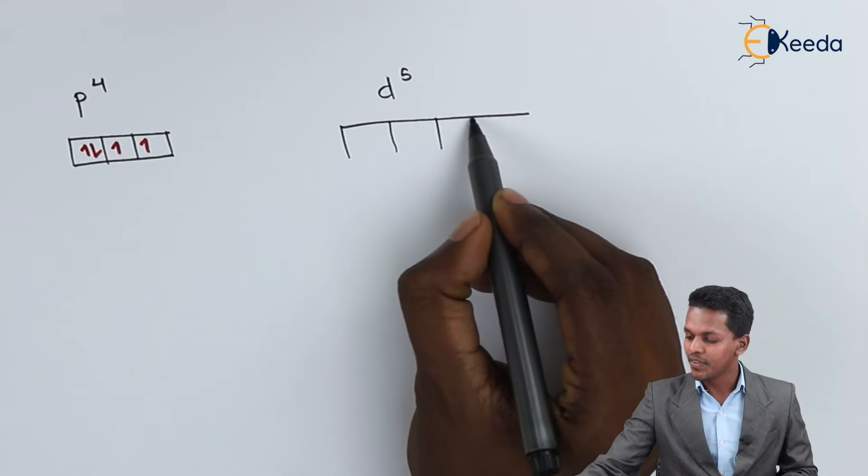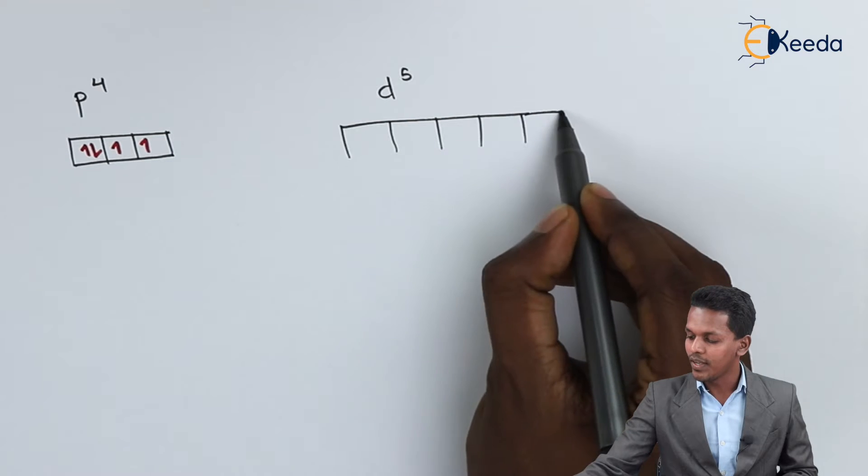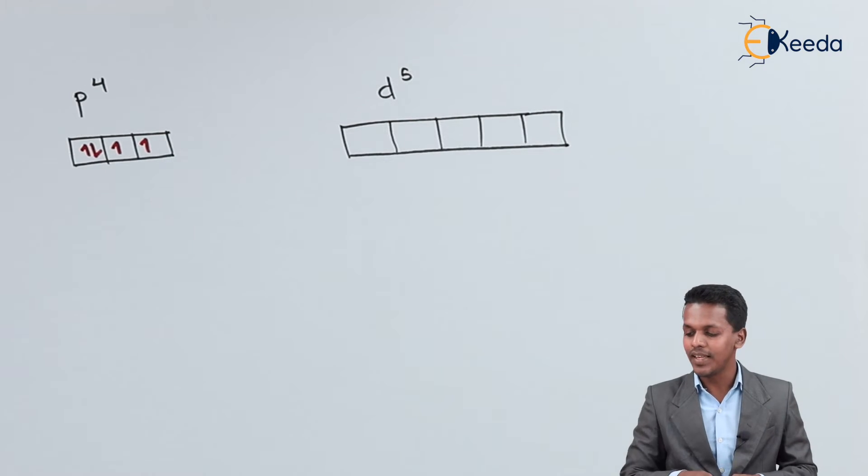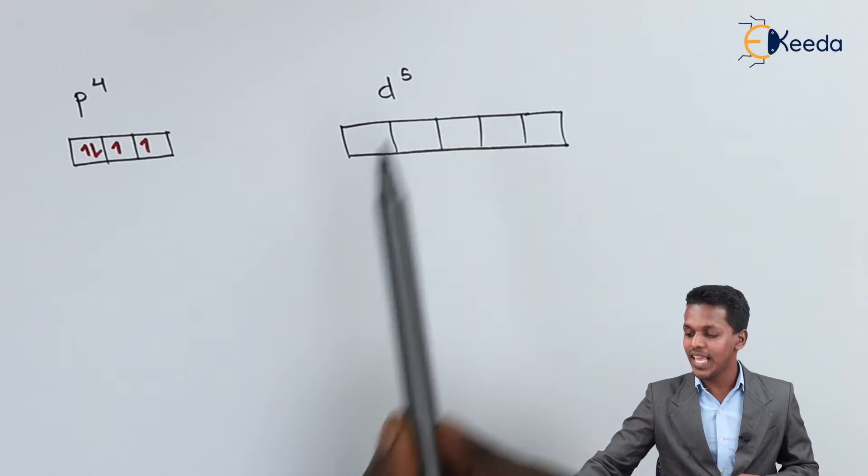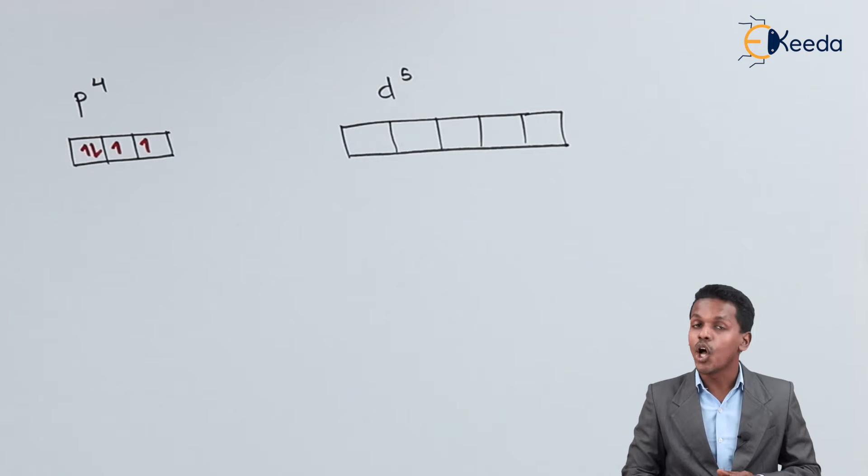So here basically I am representing the orbitals in such a manner: 1, 2, 3, 4, 5. So these are the 5 orbitals that we have. And what we have is 5 electrons. So how can we fill it?